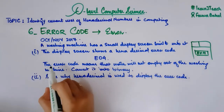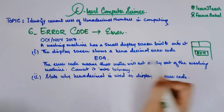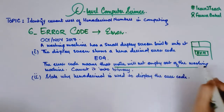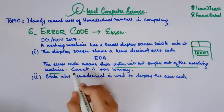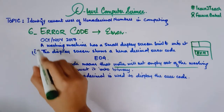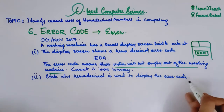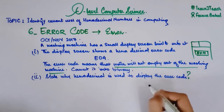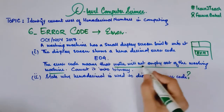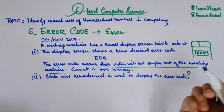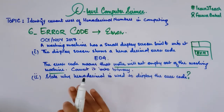The error code E04 means that water will not empty out of the washing machine. The question has two parts: first, convert E04 into binary; and second, state why hexadecimal is used to display the error code — in other words, give a reason why hexadecimal is used instead of a text-based message.